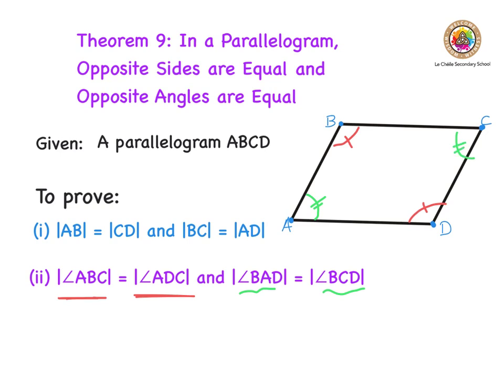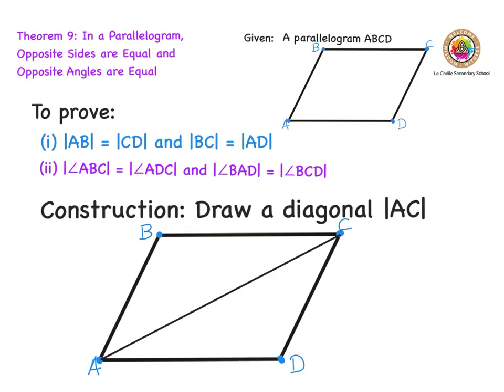So that's our proof outlined. We have basically two parts to the proof, and we begin now. The first thing we want to do is construct a diagonal. We're going to construct a diagonal line from A to C. That's the first step — construction: draw diagonal AC. You can see I've joined A to C, and we're going to use that for both parts of our proof.